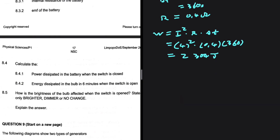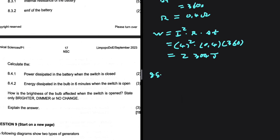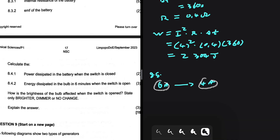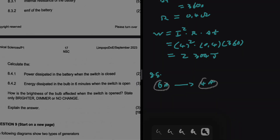For 8.5: how is the brightness of the bulb affected when the switch is opened? State only brighter, dimmer, or no change. When the switch is open, the current is 4 amps, and when it is closed, the current is 6 amps. So when the switch is opened, the current through the bulb is reduced, meaning the bulb glows dimmer.